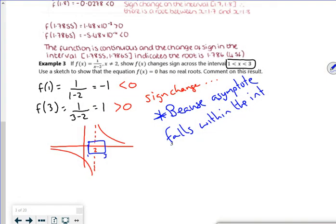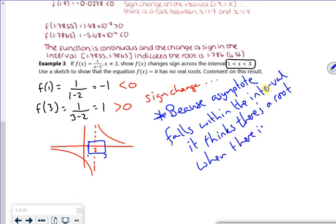I can't believe that I forgot about the timer. So, sorry about that. Because the asymptote falls within the interval, it thinks there's a root when there isn't one. So there is actually no root here.